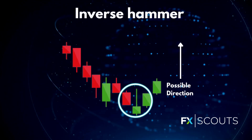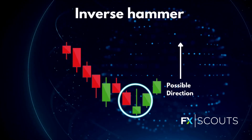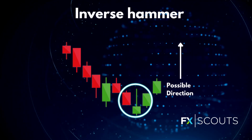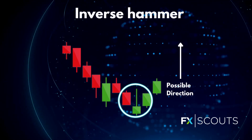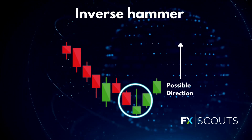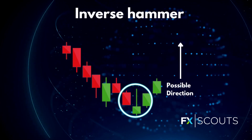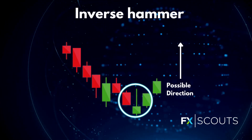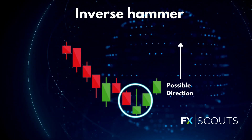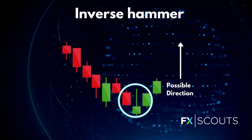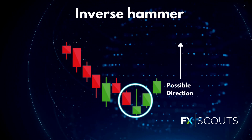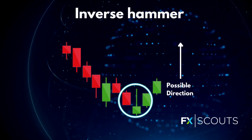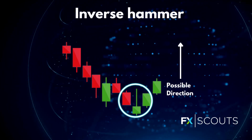A similarly bullish pattern is the inverted hammer. The only difference being that the upper wick is long while the lower wick is short. It also indicates a buying pressure followed by a selling pressure that was not strong enough to drive the market price down. The inverted hammer suggests that buyers will soon have control of the market.